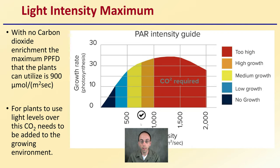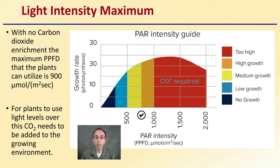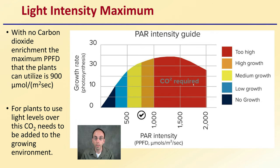So light intensity maximum: without carbon dioxide enrichment, the maximum PPFD for the plants is about 900 micromoles per meter squared per second. For plants to use higher light levels above this, carbon dioxide needs to be added to the growing environment. You can add more light, but you want to maximize that by also supplementing with carbon dioxide. One note about the graph: the 2 in CO2 should be a subscript, not a superscript.